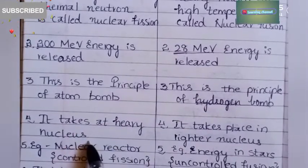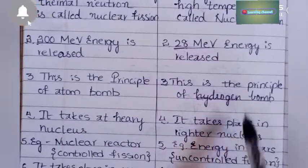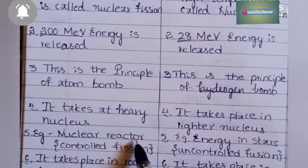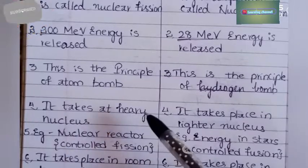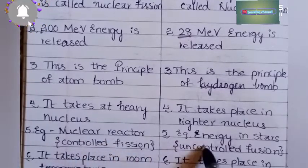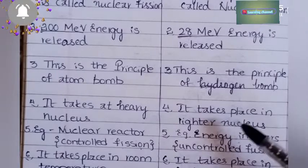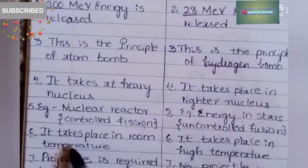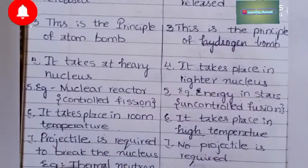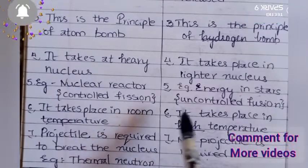Nuclear fission takes place in heavy nuclei, while nuclear fusion takes place in lighter nuclei. Nuclear fission takes place at room temperature, whereas nuclear fusion takes place at high temperature. In nuclear fission, a projectile such as a thermal neutron is required to break the nucleus; in nuclear fusion, no projectile is required. These are the differences between nuclear fission and nuclear fusion.